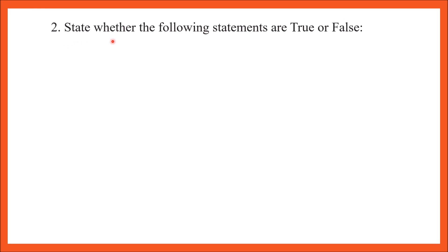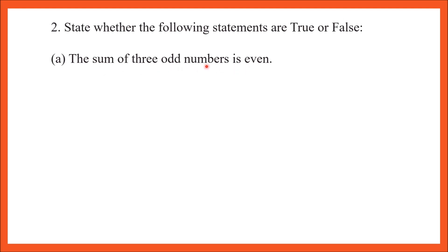Question number 2: state whether the following statements are true or false. Part A: the sum of 3 odd numbers is even. To solve this, add any 3 odd numbers and check. I took 1, 3, and 5. 1 plus 3 is 4, and 4 plus 5 is 9. Is 9 an even number? No, 9 is not an even number — it is not divisible by 2. So this statement is false.